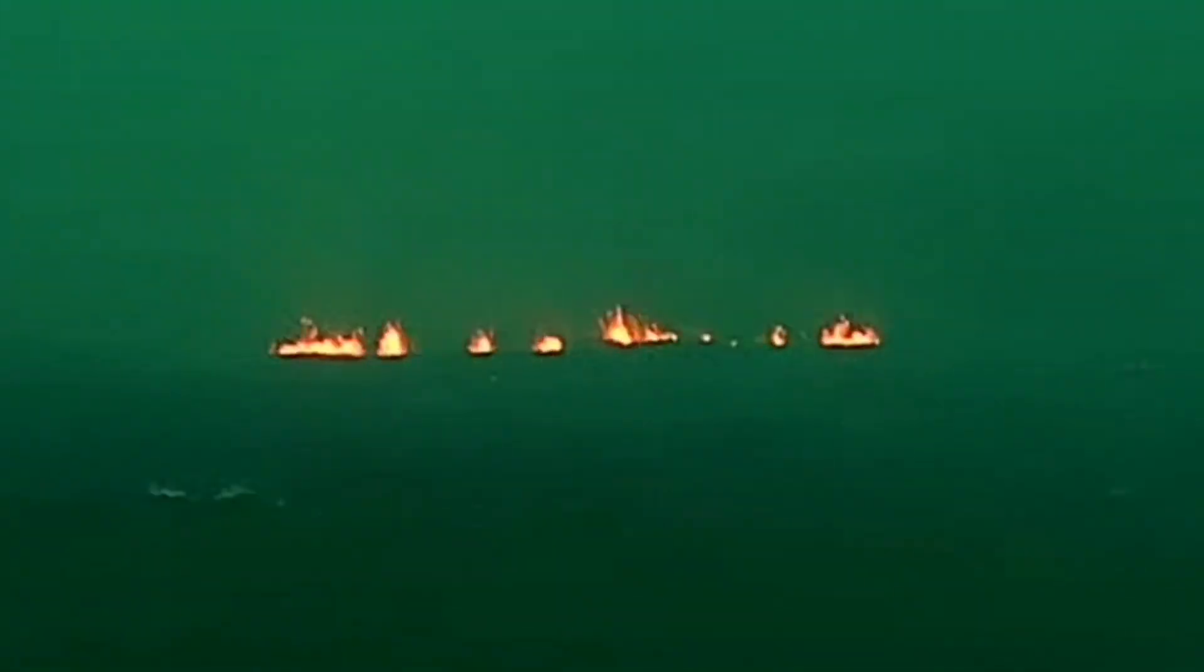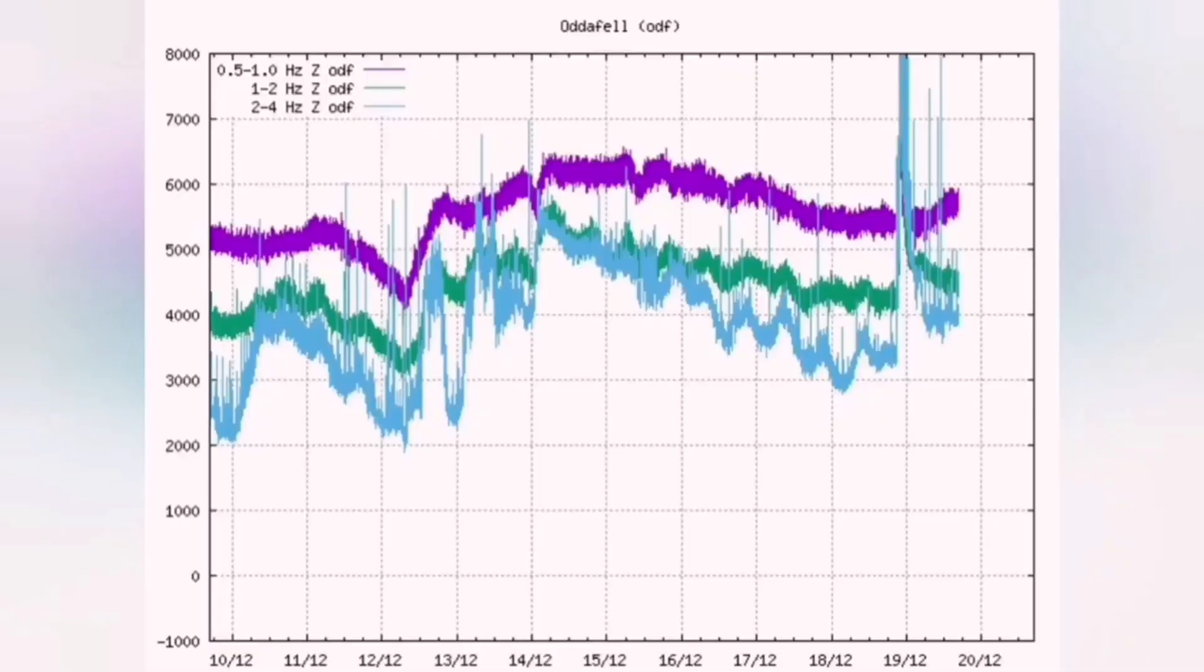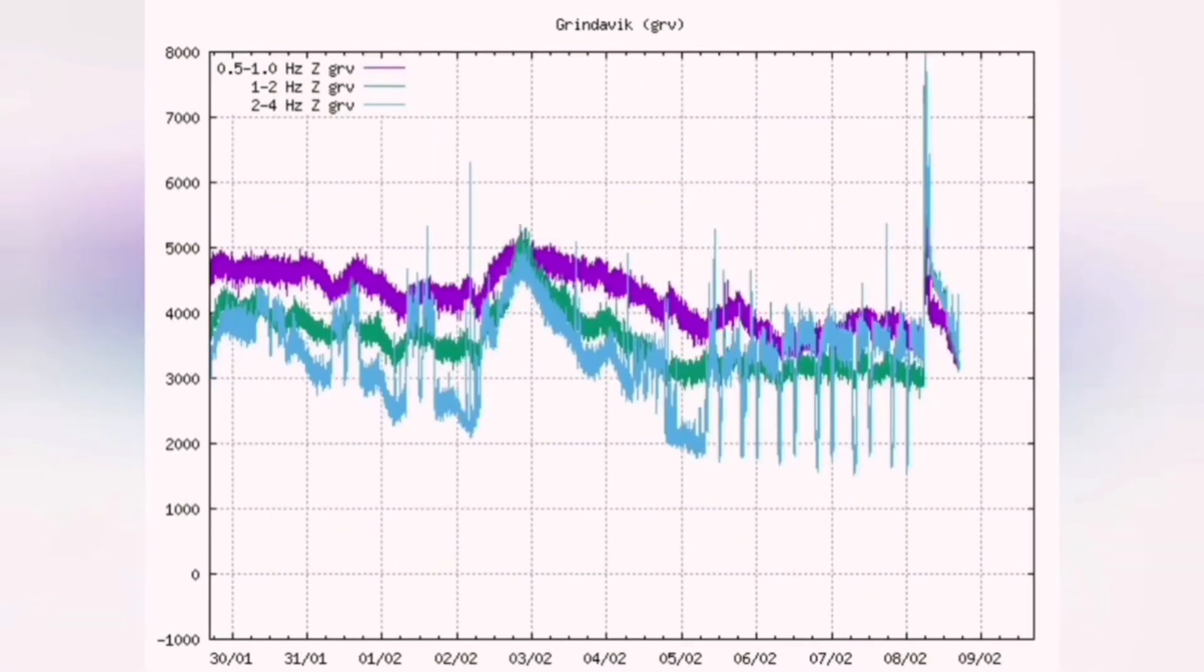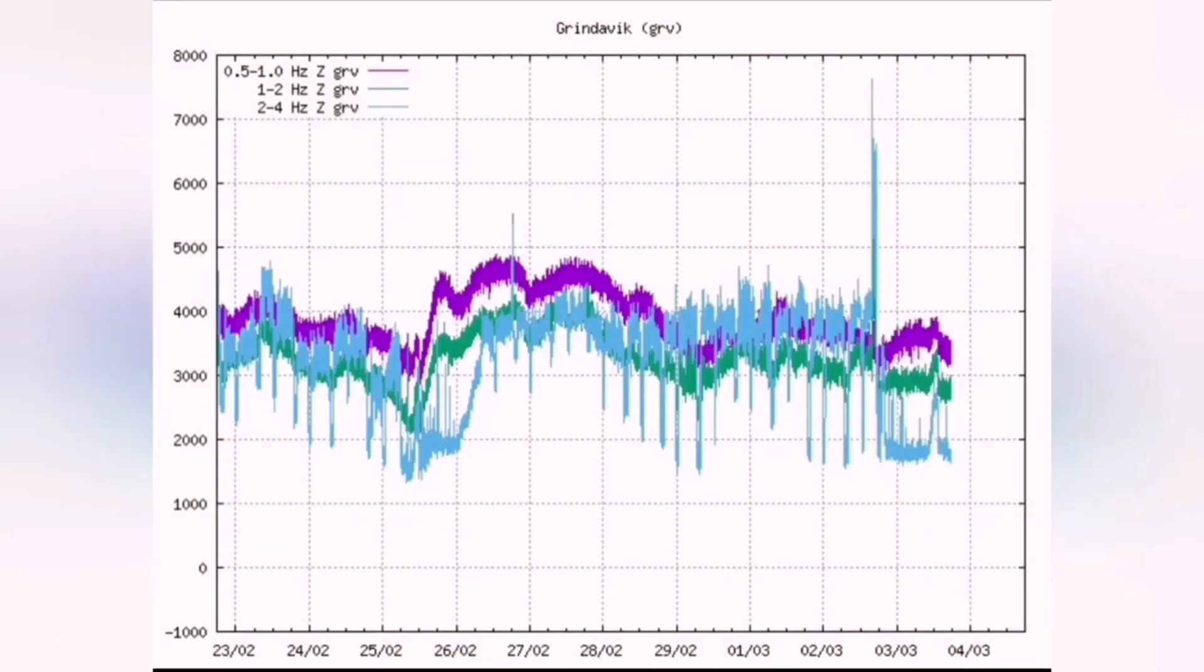This is in line with the pattern we have seen over the past eruptions. Since the December, January, and February eruptions and the failed eruption in early March, we saw a decline in the number of tremors and their intensity.